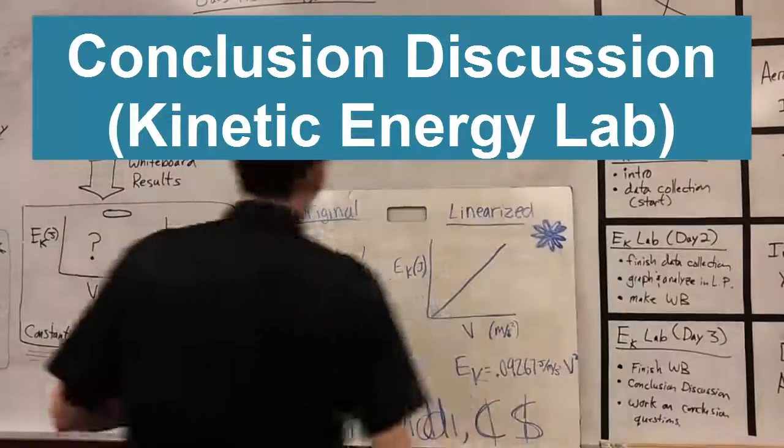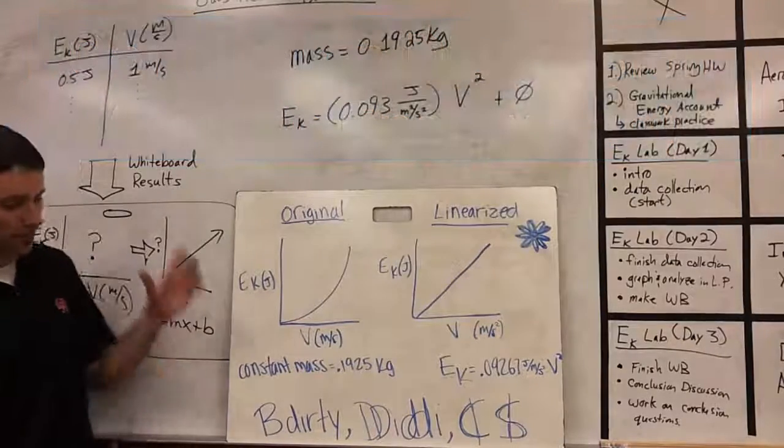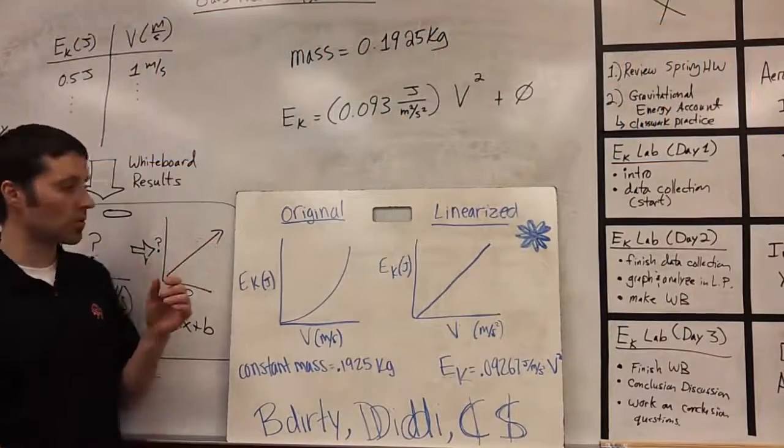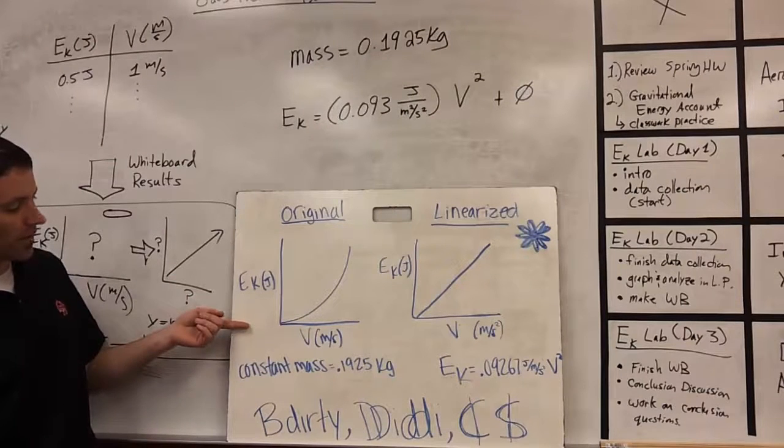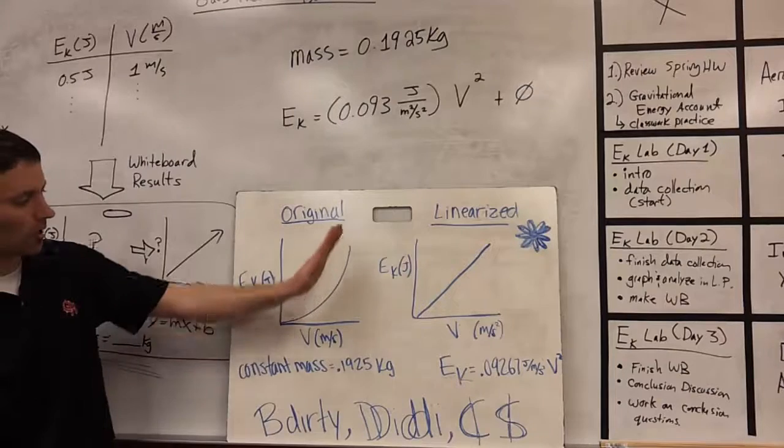All right. So here's one specific example of the lab results we got. We looked at the relationship between both kinetic energy and velocity, and we found that when we graphed it originally, we got a top-opening parabolic relationship.